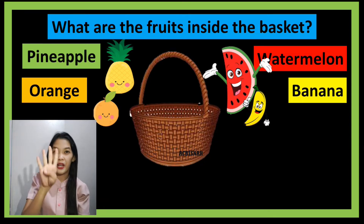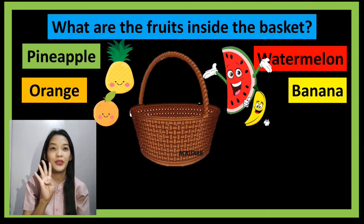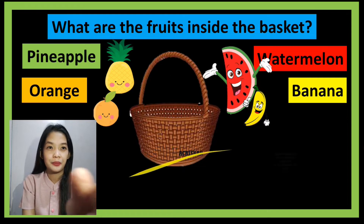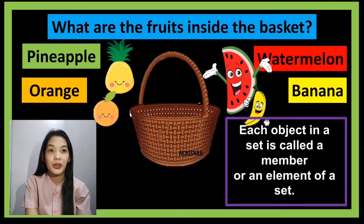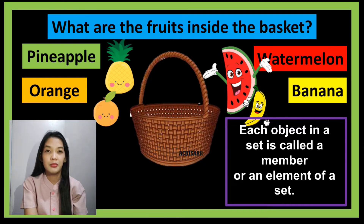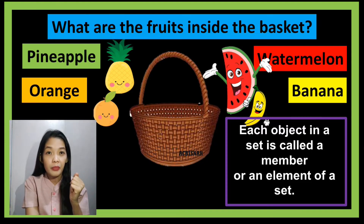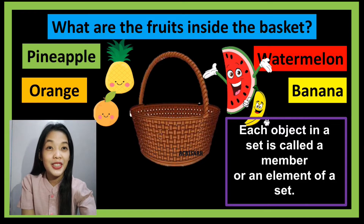That's correct, we have four fruits inside the basket. Now take note: each object in a set is called a member or an element of a set, which means pineapple, orange, watermelon, and banana are the members or the elements of the given set.